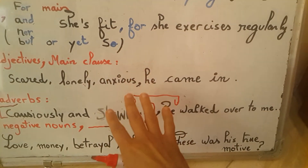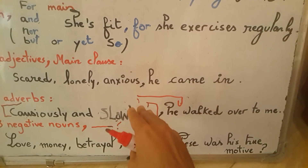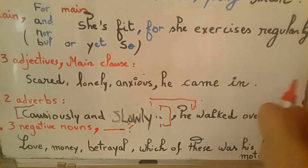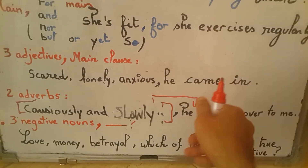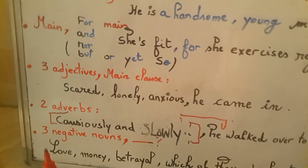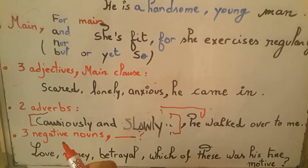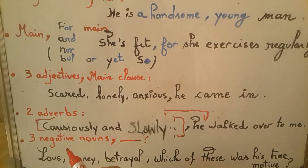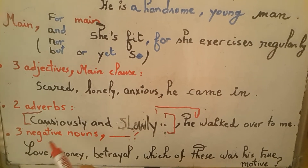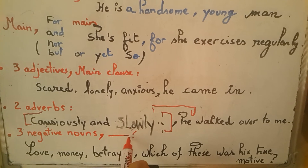Always be aware and think about where the adverbs sound best — is it in the middle, at the start, or at the end? To also make your style of writing and way of speaking very noticeable, you could use three negative nouns followed by an interrogative sentence.